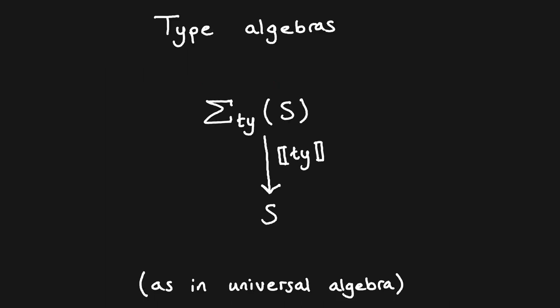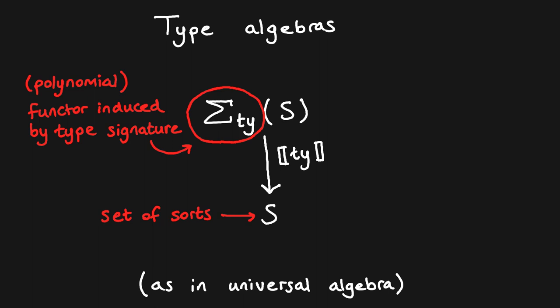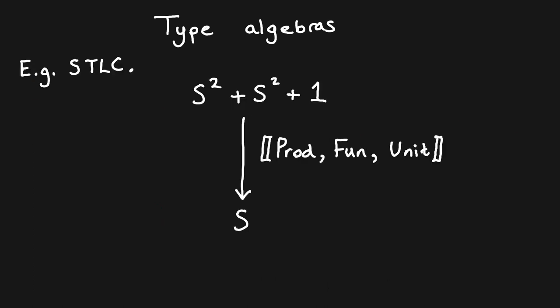Let's start by looking at the structure of types in a model of simple type theory. The types are given exactly as in universal algebra, in which we have a set of elements — here the types — closed under n-ary operations and subject to various equations. We can thus represent the type structure as a functor algebra. Here, S is a set of sorts or types, Sigma is the functor induced by the type signature for the simple type theory, and the denotation function ensures that the set of sorts is closed under the type-forming operators.